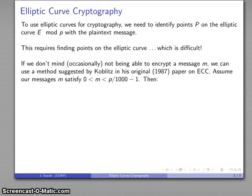We'll start by assuming that our messages fall in some interval range. With Koblitz, he assumed that our messages fell within the range between 0 and p/1000 - 1.